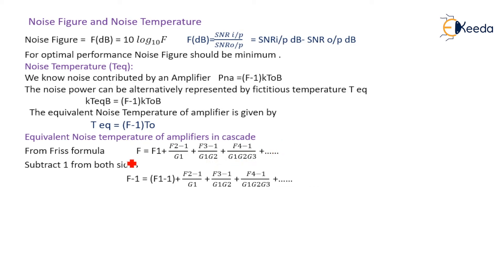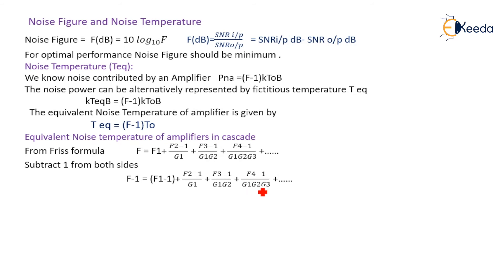Now we subtract 1 from both sides: F − 1 = (F1 − 1) + (F2 − 1)/G1 + (F3 − 1)/(G1 × G2) + (F4 − 1)/(G1 × G2 × G3) + and so on.